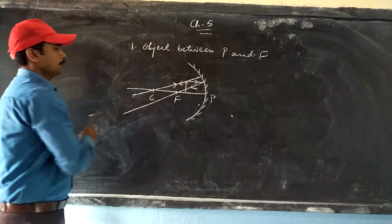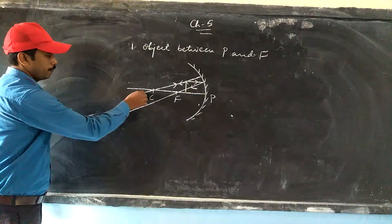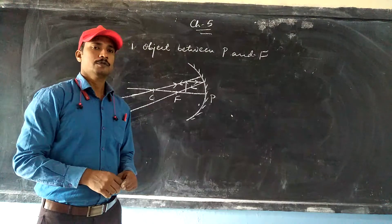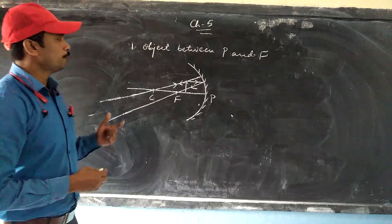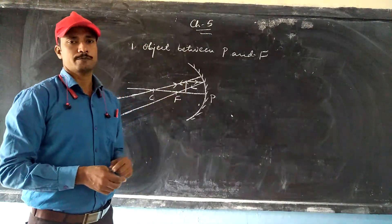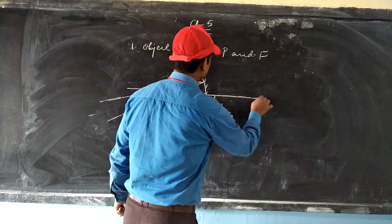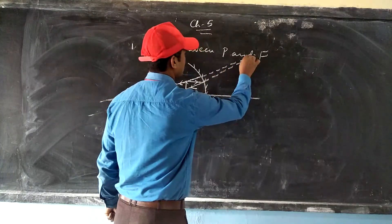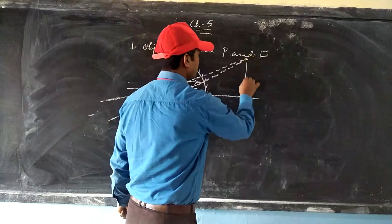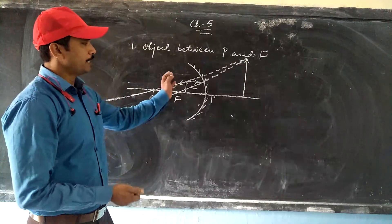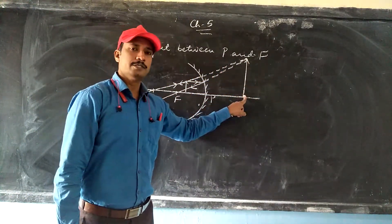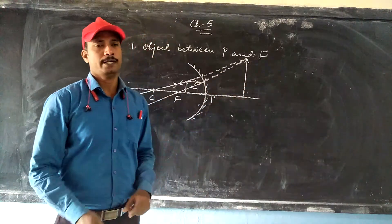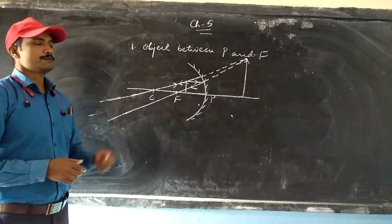After reflection, these two rays are not going to meet anywhere in front of the mirror since the rays are diverging. To find where the image is, we produce the two rays back behind the mirror. The extended rays are found to meet at a certain point behind the mirror. The size of the image is much bigger than the object, and the nature this time will be virtual and erect.